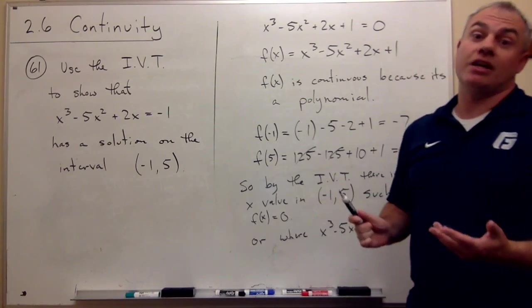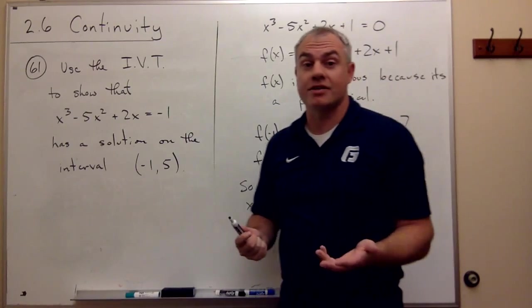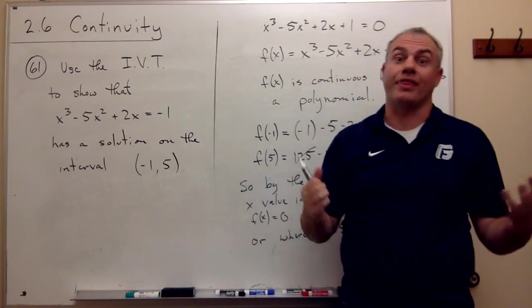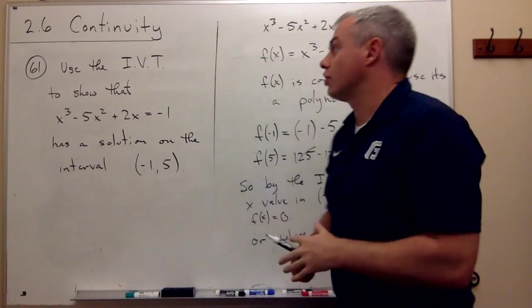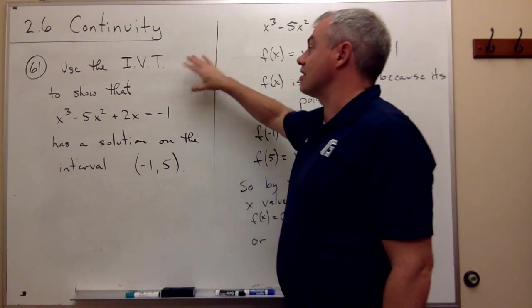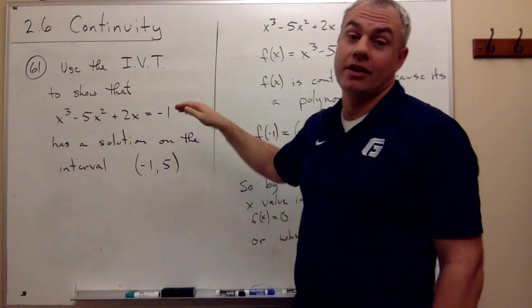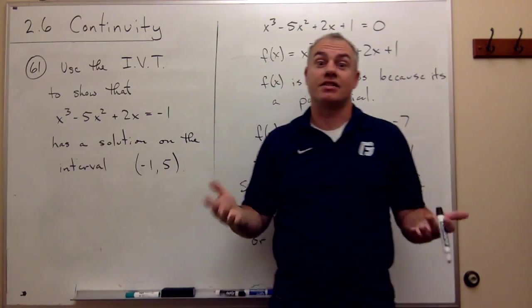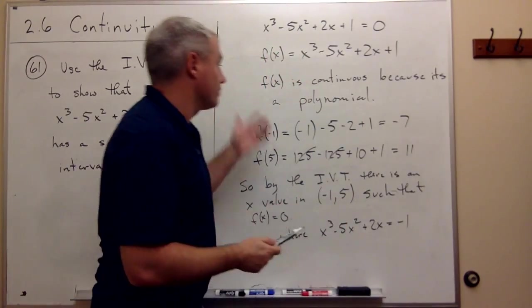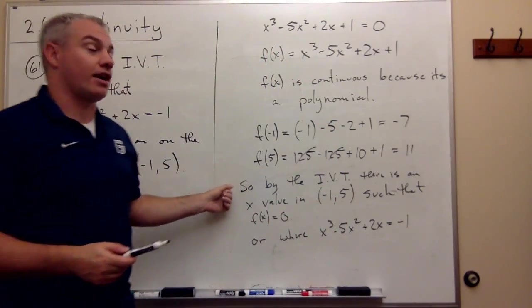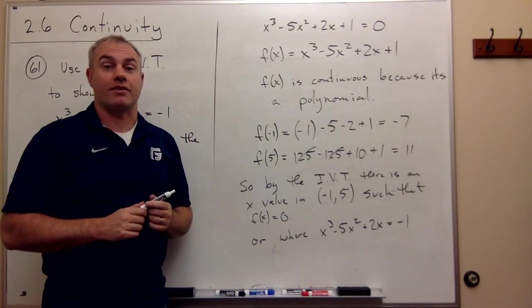Now something that the intermediate value theorem cannot do for us is it doesn't actually tell us what that x value is. It just tells us that that x value exists. So notice this problem isn't asking us to find the x value. It's just asking us, does the x value even exist at all? And the answer is, sure enough, it does. And that's guaranteed to us by the intermediate value theorem.